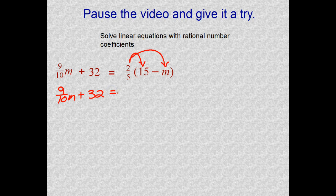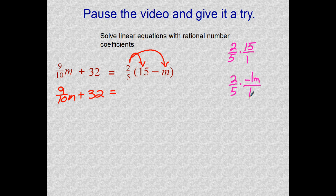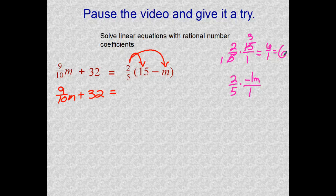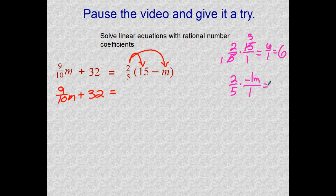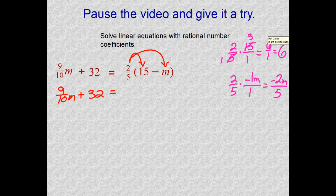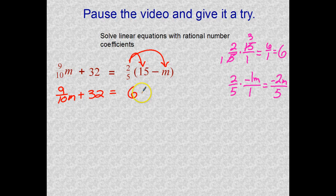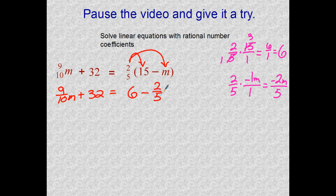Let's see what that comes out to be here. Two fifths multiplied by 15 and two fifths multiplied by negative one M. Cancel. We're going to get six over one—let's write that out: six. And nothing to cancel here, so we go straight across. Two times negative one M is negative two M. Five times one is five. So we have six minus two fifths M.